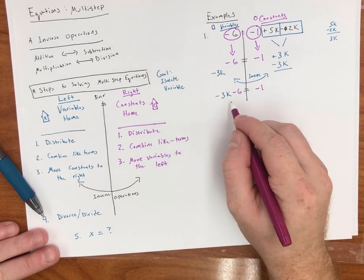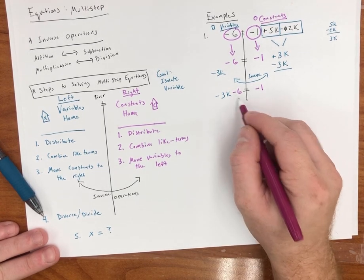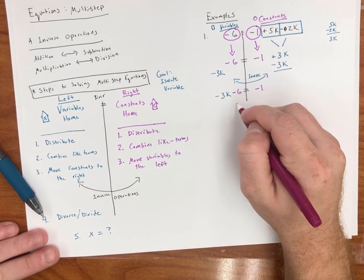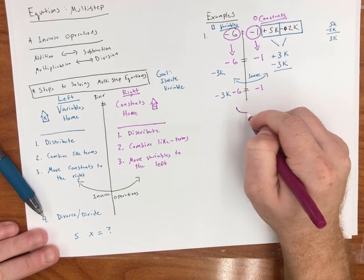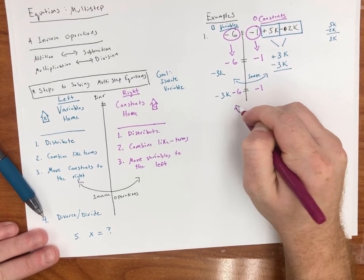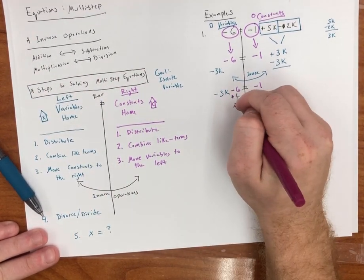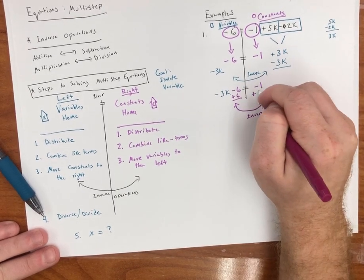So now I have negative 3k minus 6 equals negative 1. So now I need to move this constant from the left to the right. How do I do that? Remember, inverse operations. If I'm subtracting 6, remember subtraction, I have to add. So plus 6 here, plus 6 here.